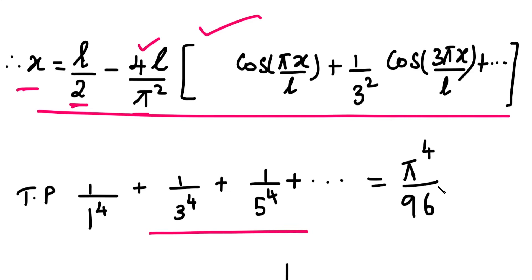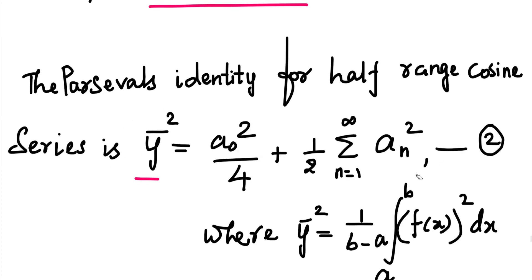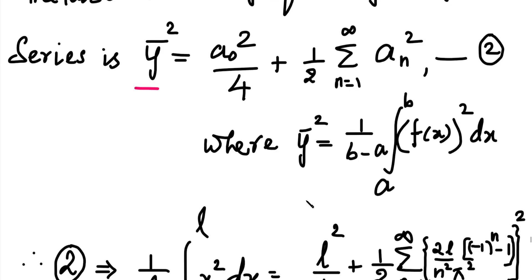Parseval's identity for the half range cosine series states: y-bar squared equals a0² by 4 plus (1 by 2) times summation of an². In the full Fourier series Parseval's theorem, there is an additional bn² term, but for the half range cosine series there is no bn term, so Parseval's identity is reduced.